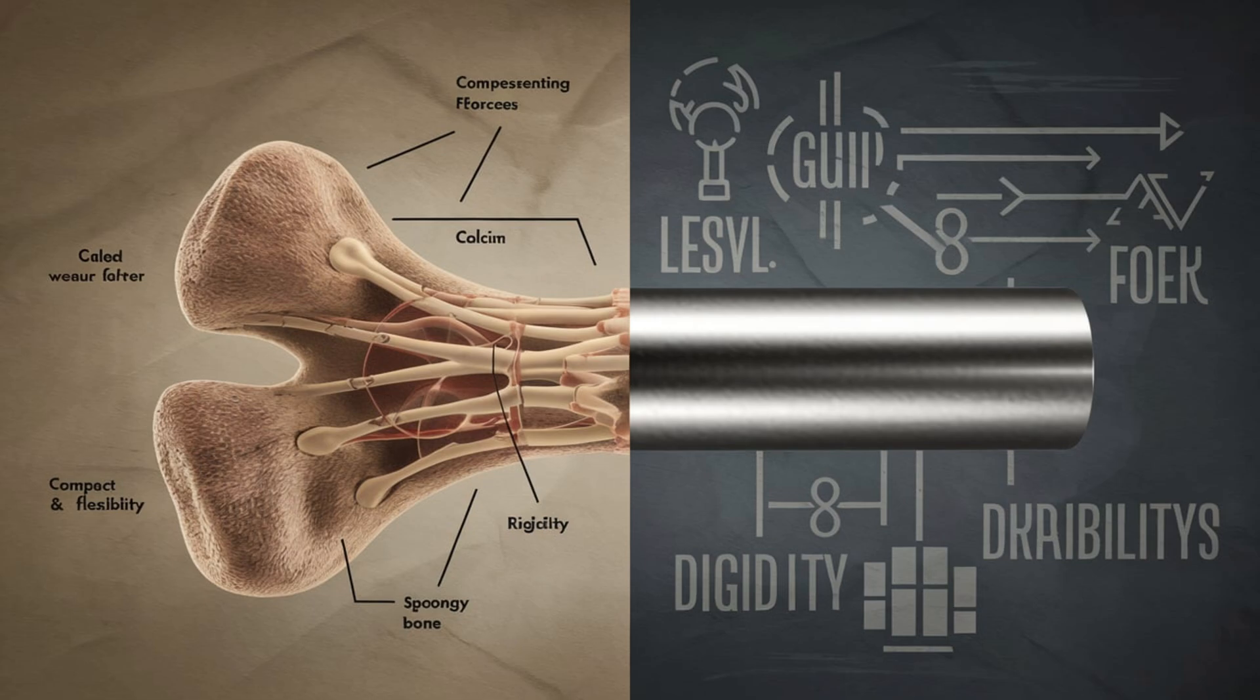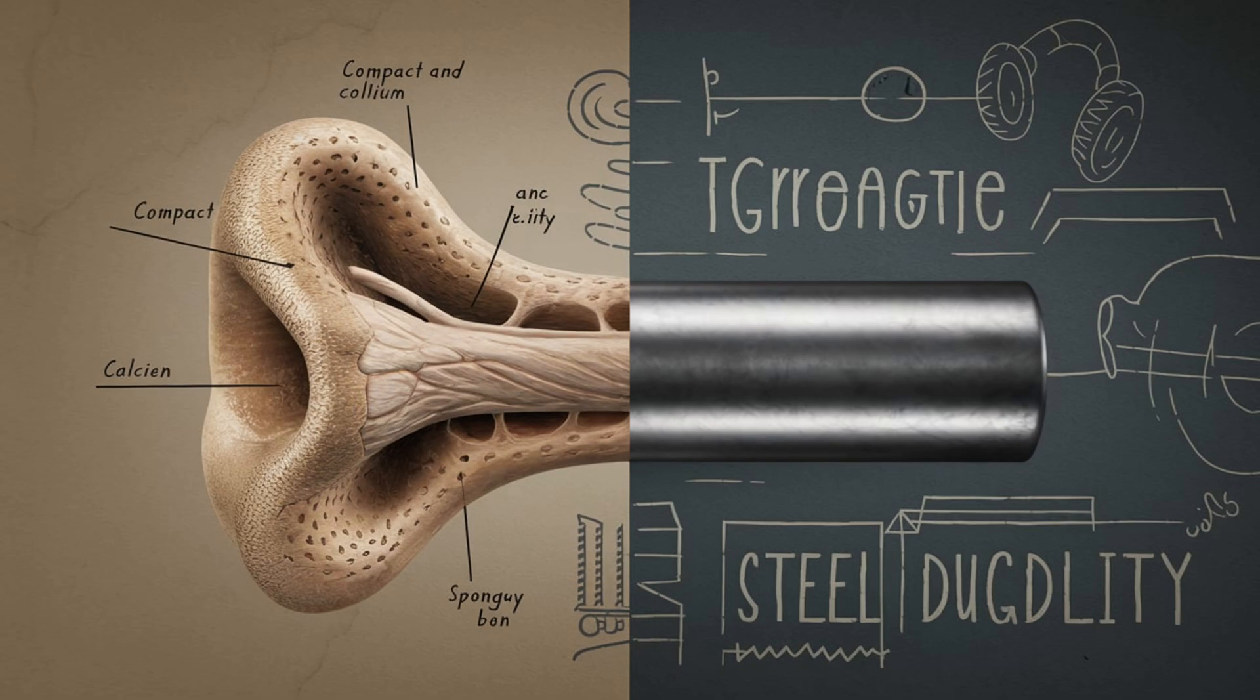When placed under high pressure, bones can bend slightly to absorb force, while steel can be more likely to crack or deform.